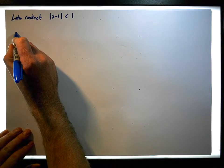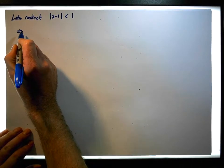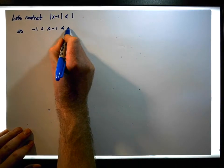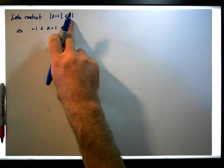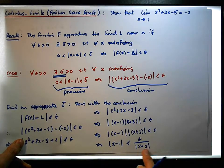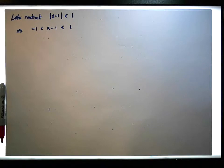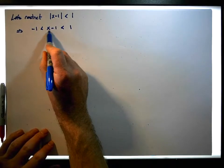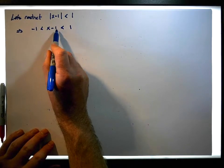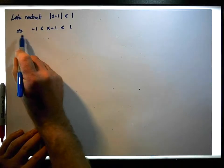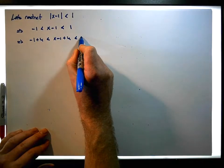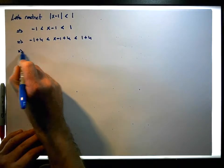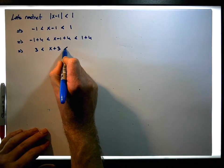From this restriction, minus 1 is less than x minus 1, which is less than 1. Now, to convert this into an expression involving x plus 3, we add 4 across the inequality. This implies minus 1 plus 4 is less than x minus 1 plus 4, which is less than 1 plus 4. So 3 is less than x plus 3, which is less than 5.